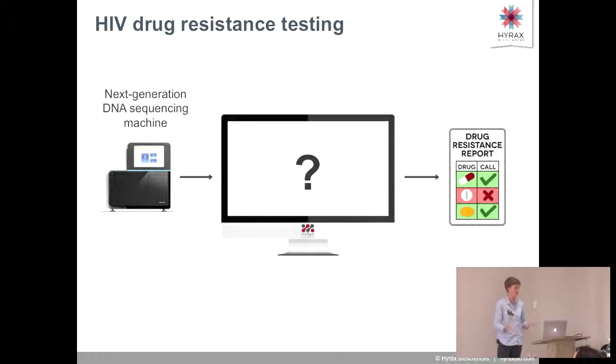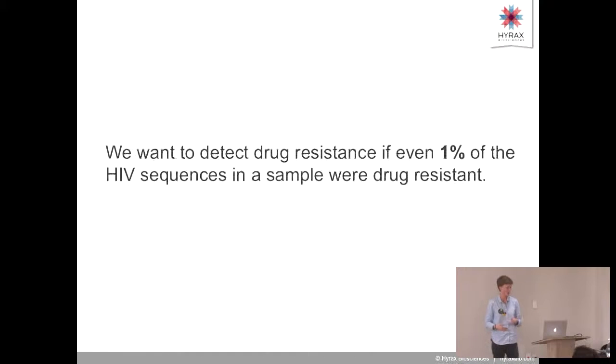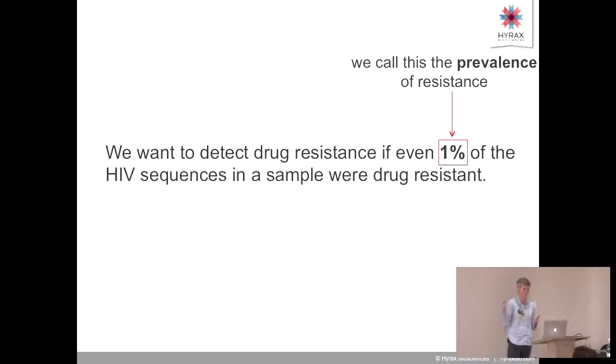We've spent about the last five years working on this. We launched in February. It's called Exotype. You can play with it at exotype.com. We build this drug-resistance testing software. We want to detect drug resistance if even 1% of the HIV sequences in a sample were drug-resistant. We call this 1% the prevalence of the resistance, the percentage of HIV in your body that carries resistant mutations.